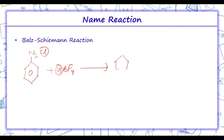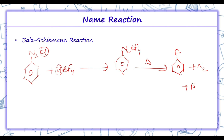We get N2BF4, then on heating, BF3 is removed and N2 is removed, and we get fluorine — that is fluorobenzene. So Balz-Schiemann reaction is basically used for the preparation of fluorobenzene only.